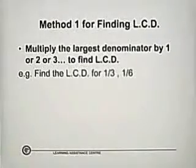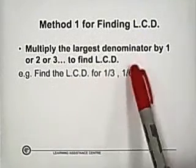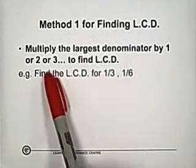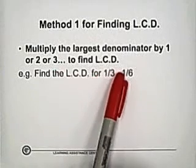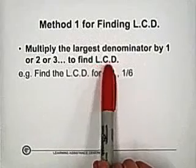Method one: Multiply the largest denominator by one or two or three until you find the least common denominator, and we can say LCD.